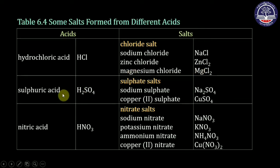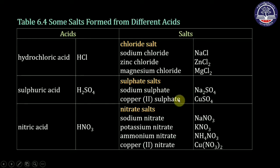Sulfuric acid has the formula H2SO4. Sulfuric acid forms sulfate salts. Examples: sodium sulfate (Na2SO4), copper sulfate (CuSO4). Nitric acid has the formula HNO3. Nitric acid forms nitrate salts. Examples: sodium nitrate (NaNO3), potassium nitrate (KNO3), ammonium nitrate (NH4NO3), copper(II) nitrate (Cu(NO3)2).